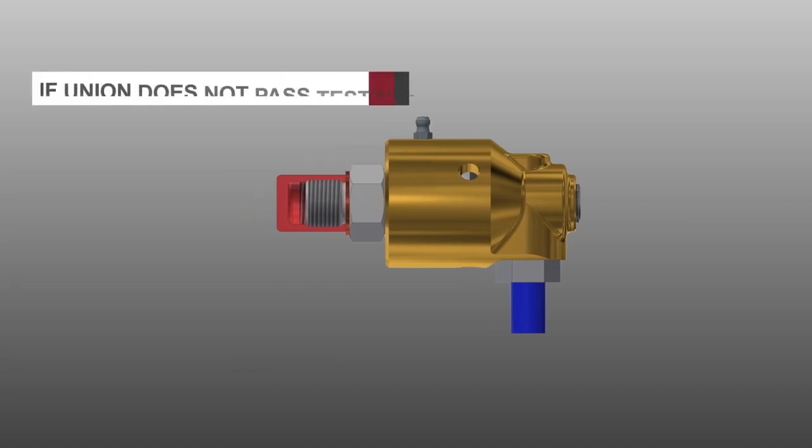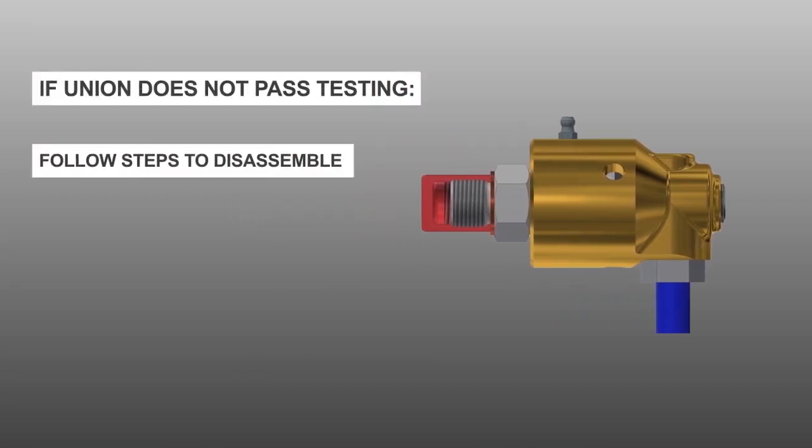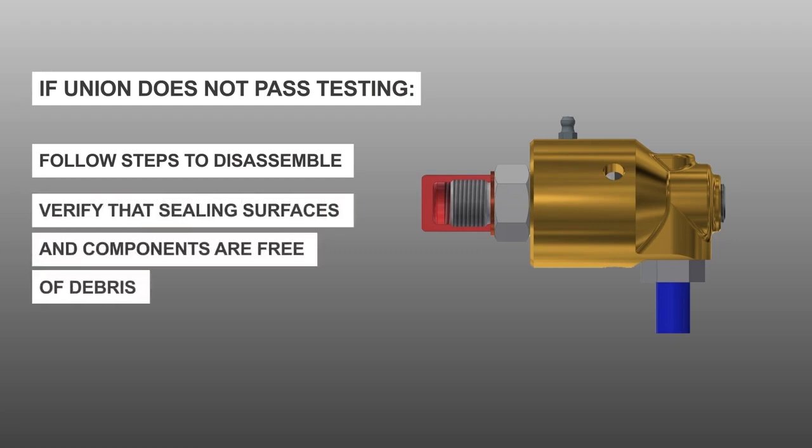In the instance where the union does not pass testing, follow steps to disassemble. Verify that sealing surfaces and components are free of debris and reassemble and repeat the test.